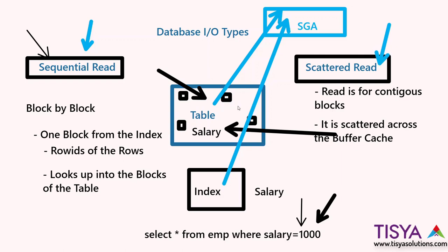For a full table scan — or even an index full scan — multiple blocks need to be read and put into the SGA. Depending on the kind of activity happening, the wait event is going to be different.